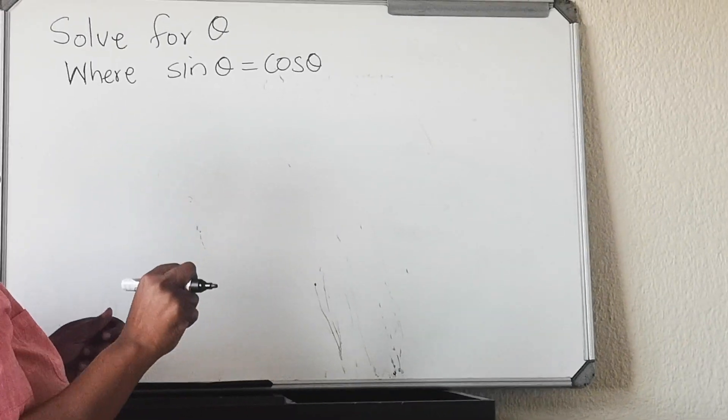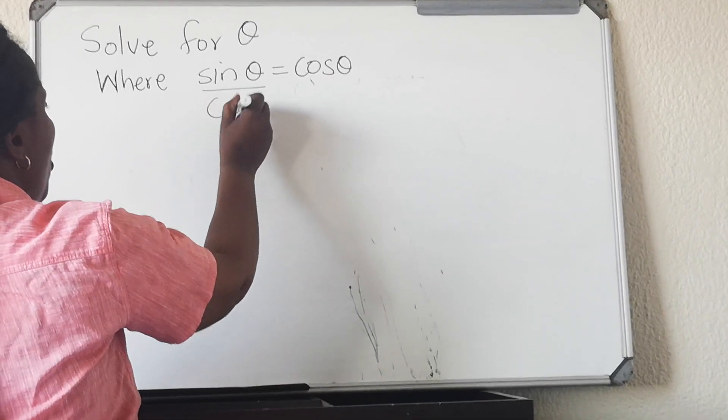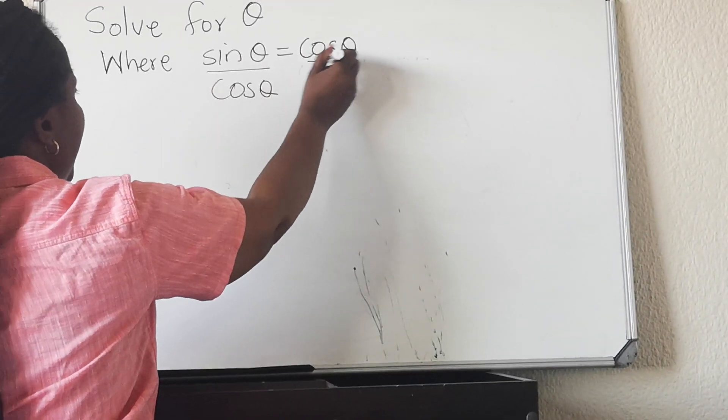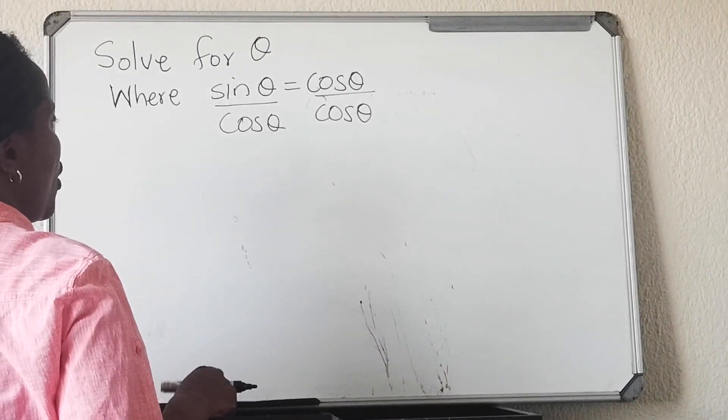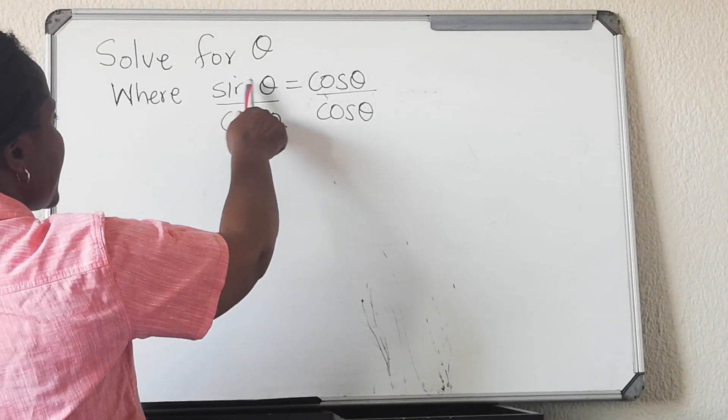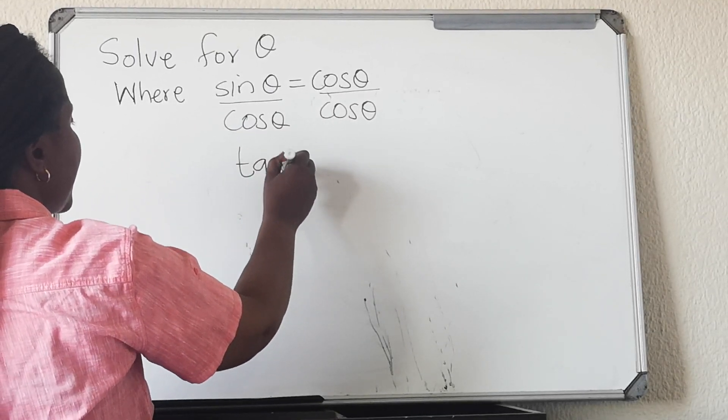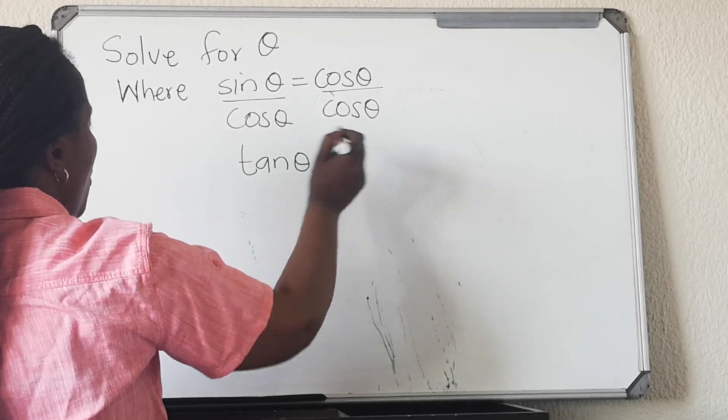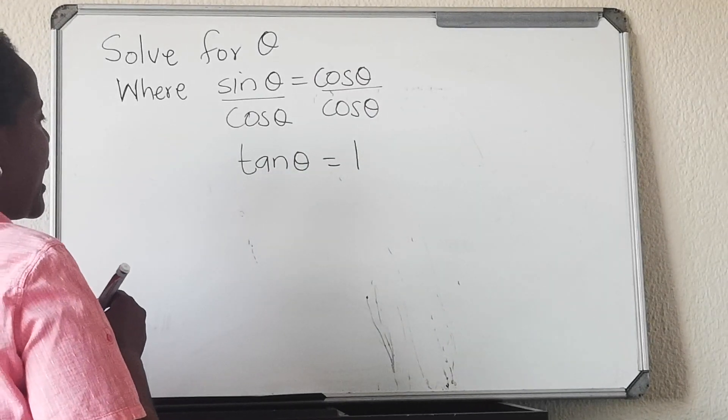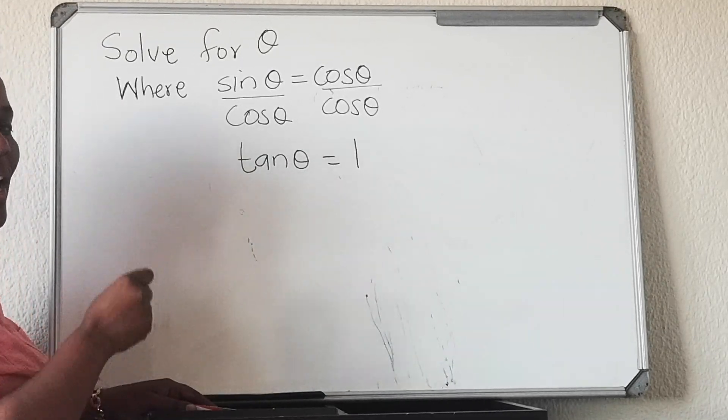And you solve it by doing the co-ratio. You're going to divide both sides with cos θ. Divide with cos θ. This is the co-ratio: sin θ over cos θ is tan θ. Cos over cos gives you one.